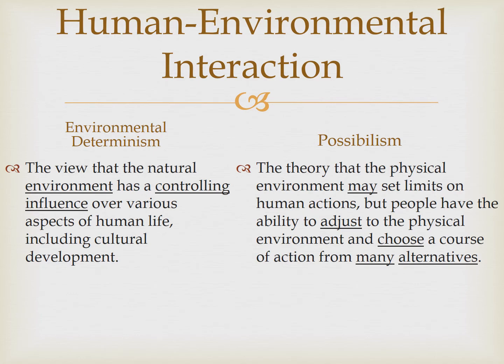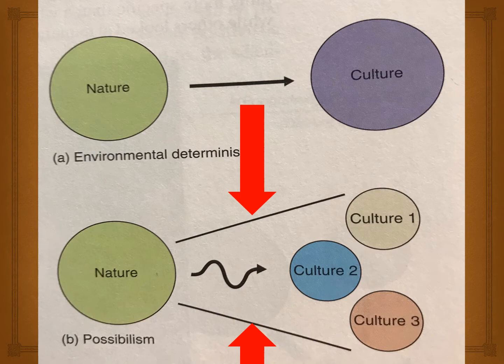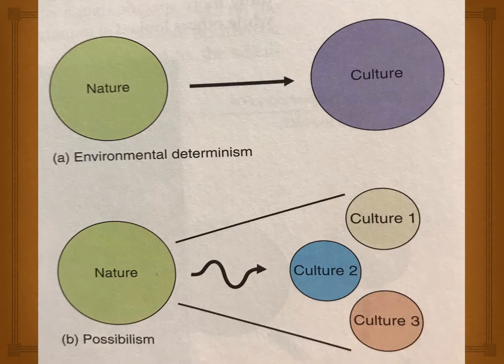Let's get some visual help. On the top, we have environmental determinism — there is no flexibility, there are no options. The physical environment is the sole force in shaping human culture, according to this theory. On the bottom, we have the theory of possibilism, which argues that the environment sets limits, offers possibilities, and different cultures may develop as a result. Environmental determinism believes that the environment determines, but with possibilism, there are possibilities.